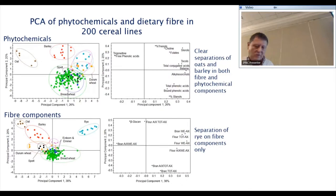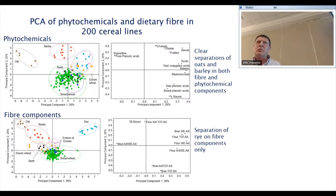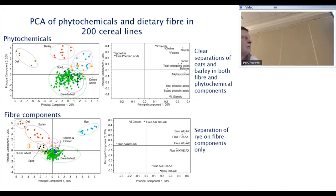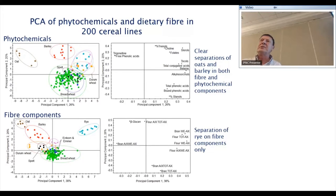We've now started combining data sets using multivariate PCA analysis to discriminate different species and, within wheat, different types. Looking at the phytochemical data set — all the phytochemical data excluding fibre components — we get a nice separation of some species: oats and barley are separated while bread wheat clusters in the middle with some other wheats. With fibre data, we get a similar separation with good separation of rye, which is higher in fibre. This means we can put variation in wheat in the context of other species, and for substantial equivalence, we can put transgenic analysis into this data set to see how it fits within the whole range of variation in wheat.